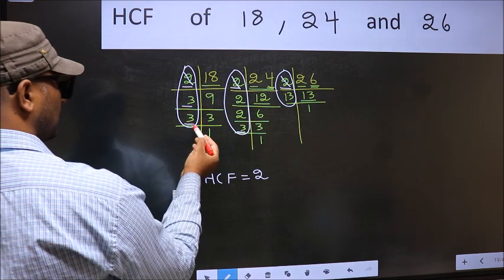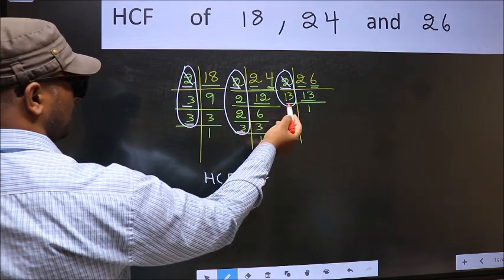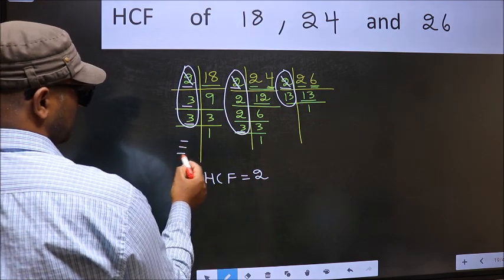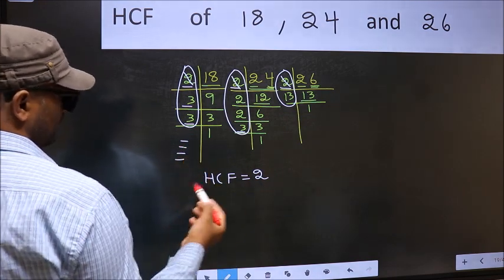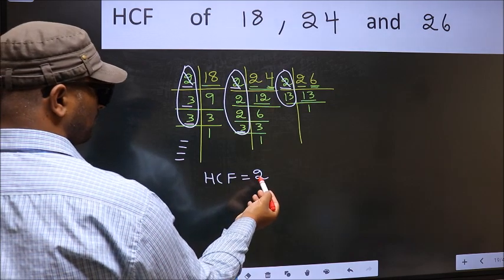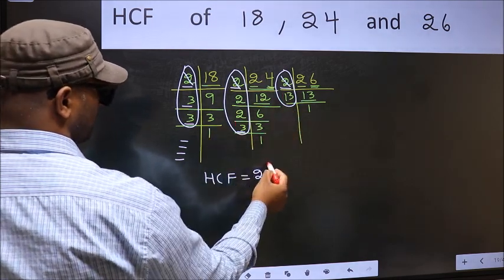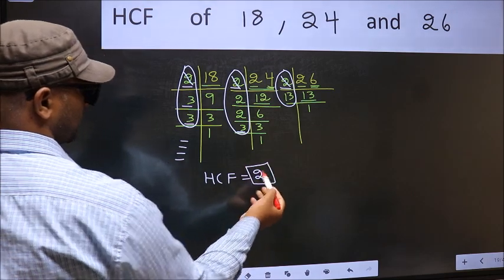Next number 3. Do we have 3 here? Yes. But we don't have 3 here, so we cannot write here. No more numbers have been left out. So, we got only one number 2 present in all the 3 places. So, 2 itself is our HCF.